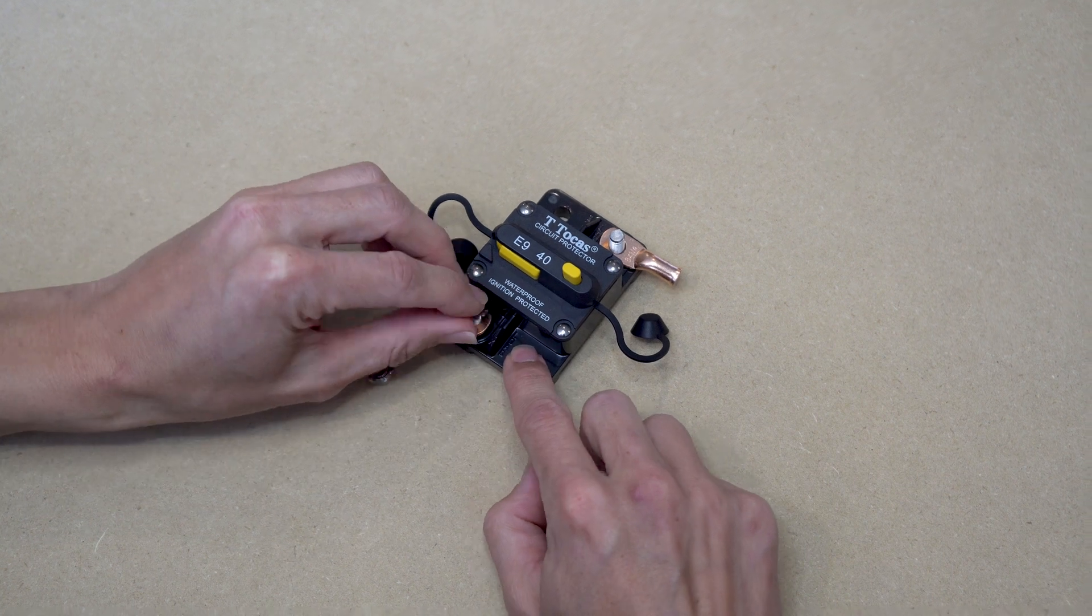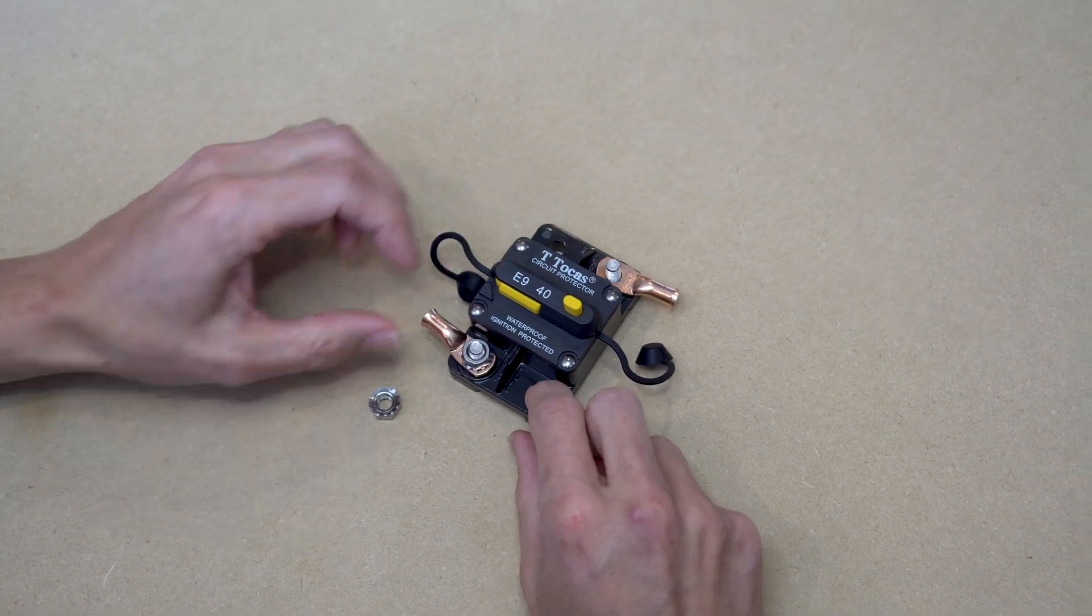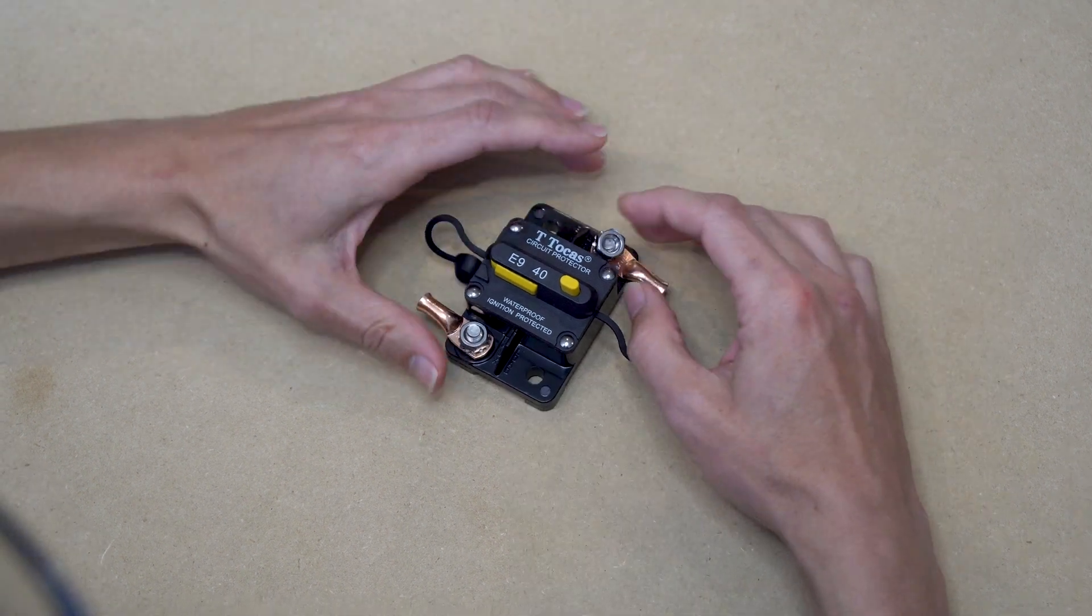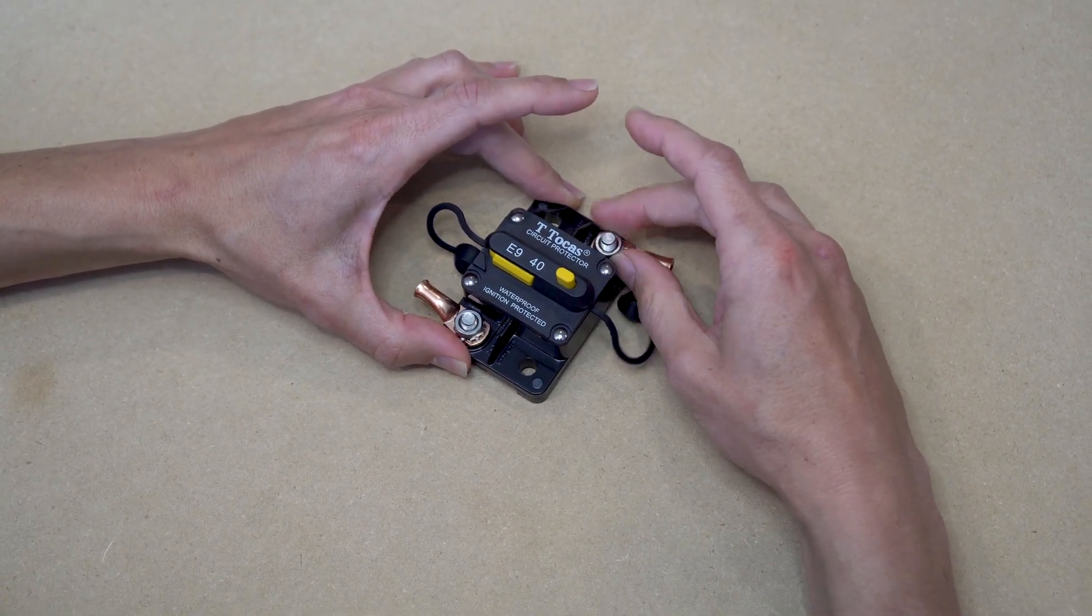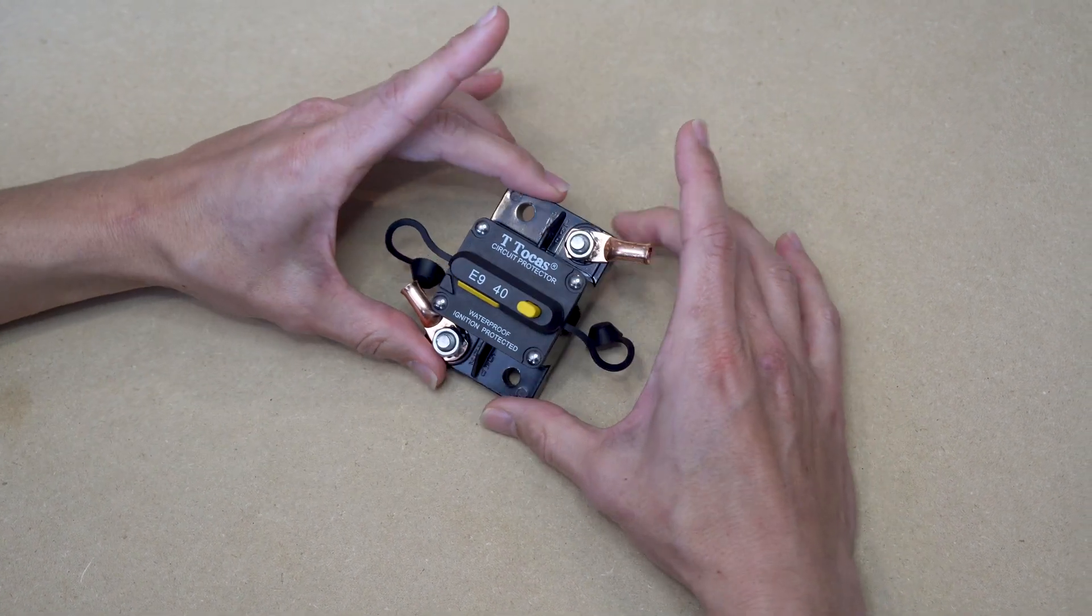Finally, to fix everything together, place the hex nuts back over the post. In this video, I'm finger tightening these hex nuts, but you'll want to use a ratchet for more torque and a tighter hold.